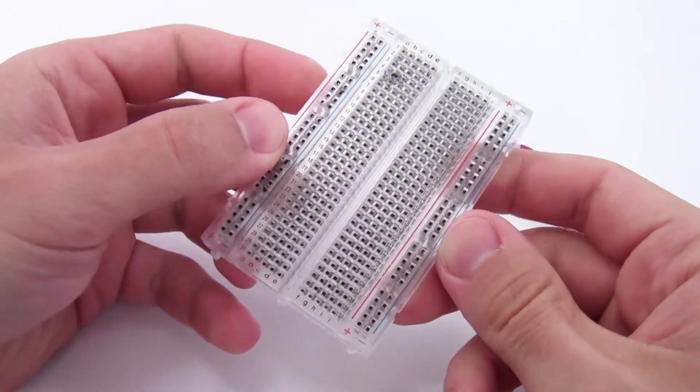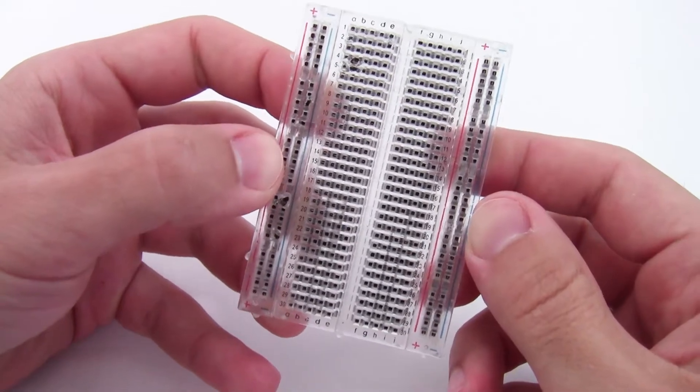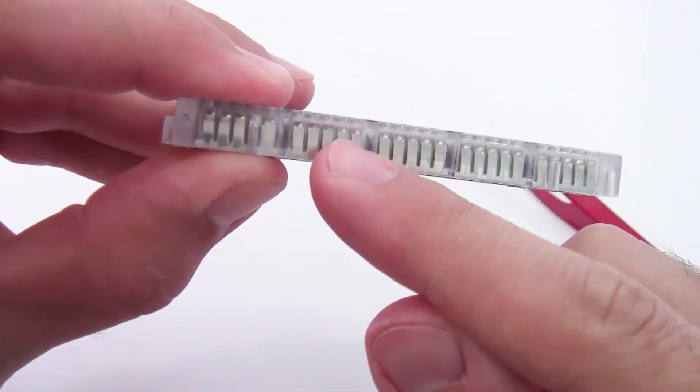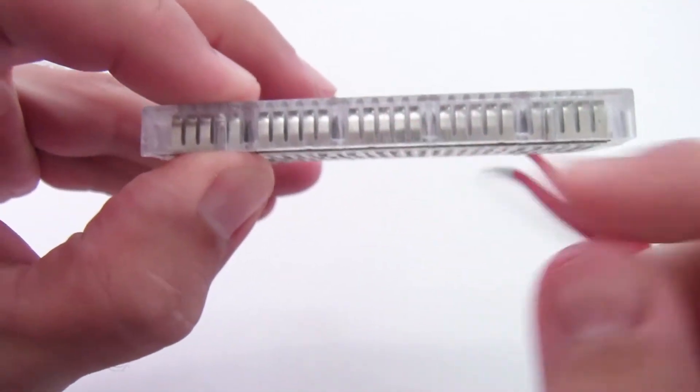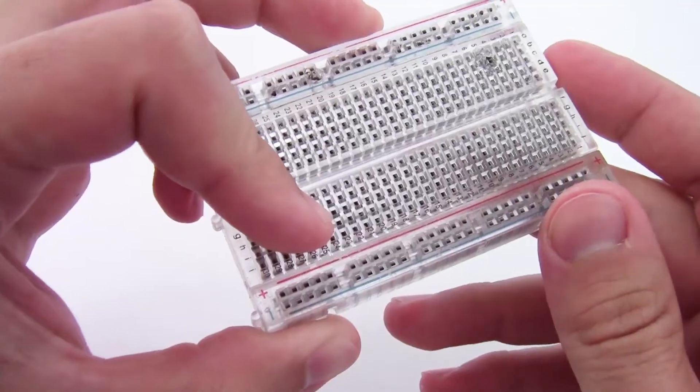Before you start using a breadboard, it helps to understand what's going on inside. Here I have a translucent plastic breadboard, and if we look closely at the sides, we can see these rows of what appear to be metal tabs on the inside. I'm going to pop some of those out so we can take a closer look at them.